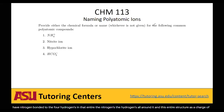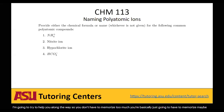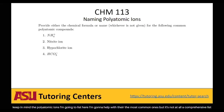Naming polyatomic ions can be pretty tricky. This portion comes down a lot to memorization, but I'm going to try to help you along the way so you don't have to memorize too much. You basically just have to memorize about seven-ish types of polyatomic ions, and then as long as you memorize a couple of rules, you'll be able to figure out all the rest. Keep in mind the ones I'm listing here are the most common, but it's not a comprehensive list — there are certainly tons of polyatomic ions we won't cover in this video.